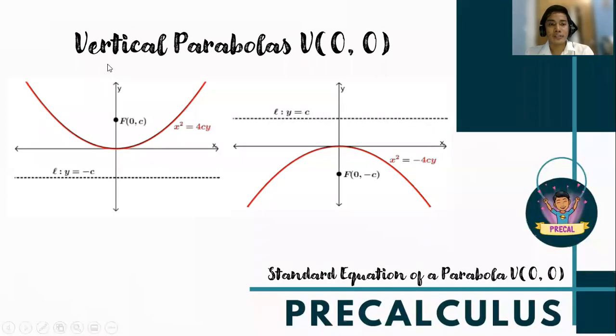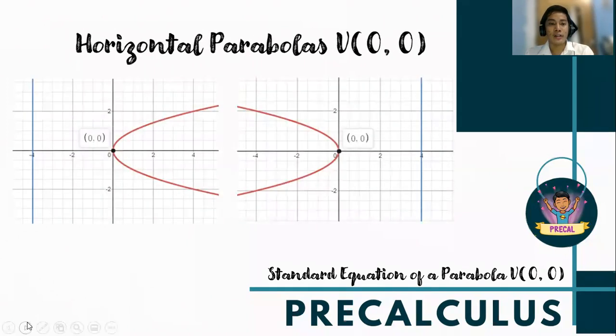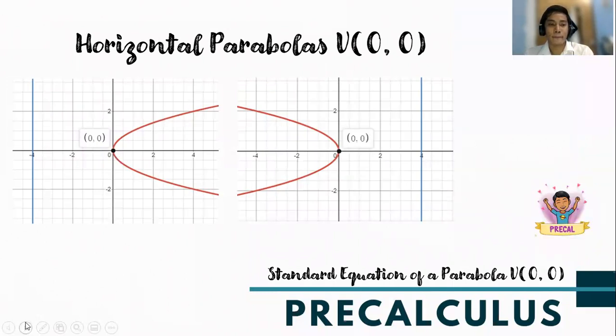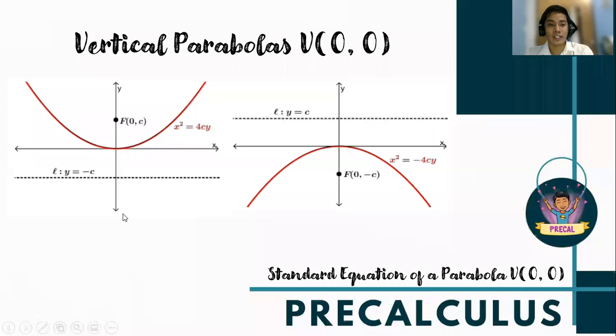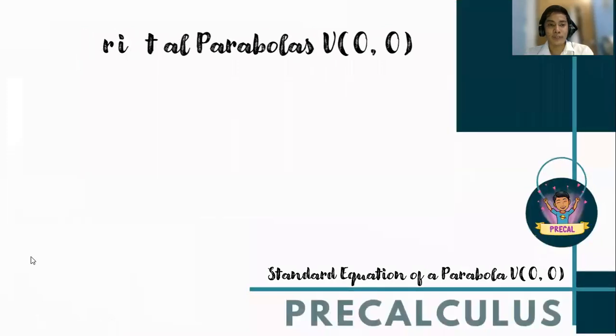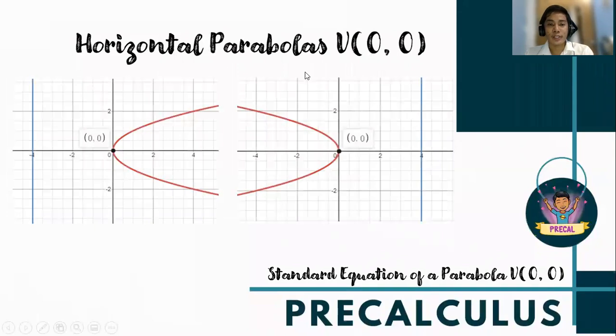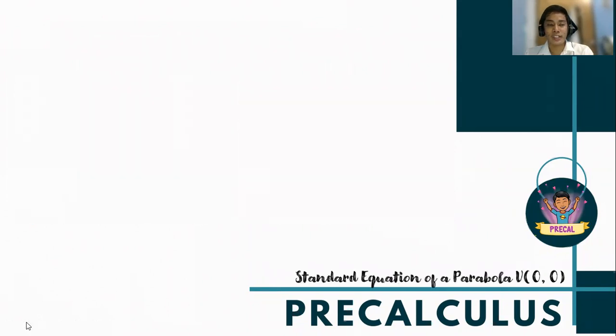For a recall, in our previous discussion we have discussed that vertical parabolas in standard position are parabolas which open upward or downward, while the horizontal parabolas with vertex at (0,0) are parabolas which open to the right or to the left. They are considered vertical because they have vertical axis of symmetry, and horizontal parabolas have horizontal axis of symmetry, which are actually the coordinate axes.